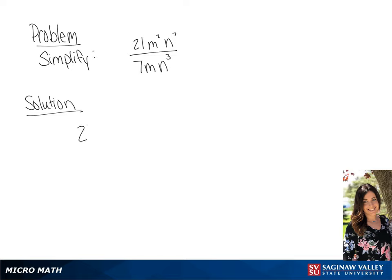We have 21m squared n to the 7th all over 7mn cubed. Since 21 divided by 7 is 3, we can simplify that to 3.